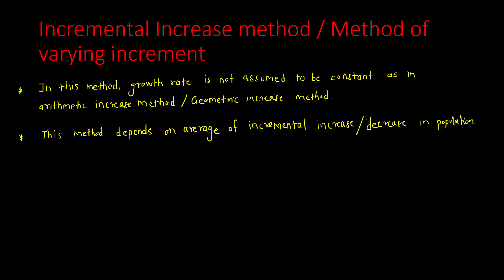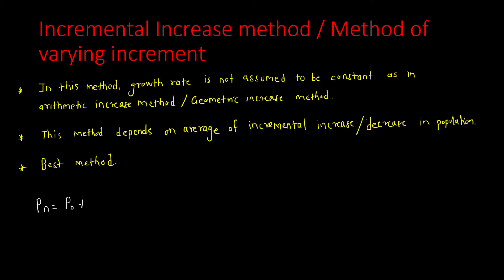This method is more suited, and according to the Government of India, we should follow this method for any city. This is considered the best method among all four methods. Now, the formula is: Pn = P0 + n·x̄ + n(n+1)/2 · ȳ.